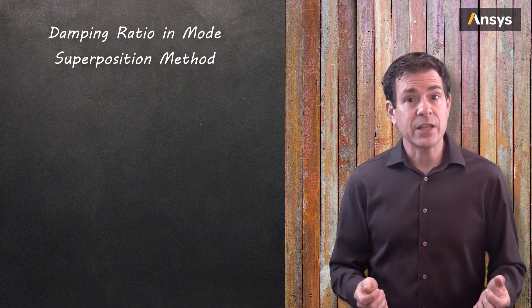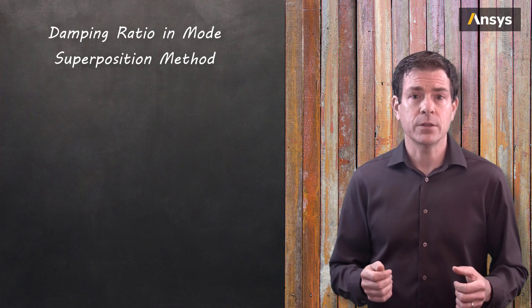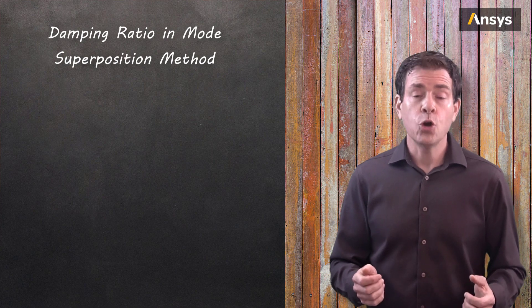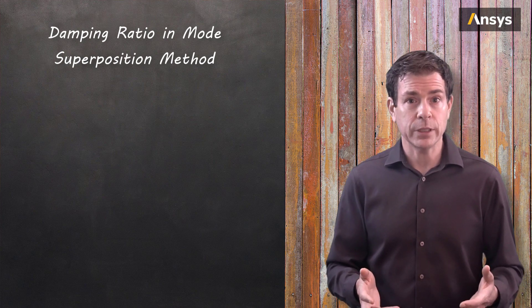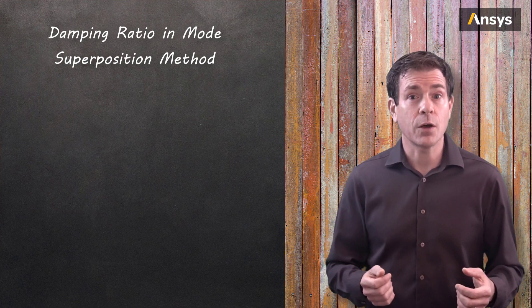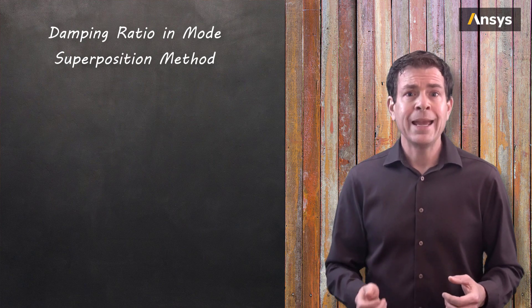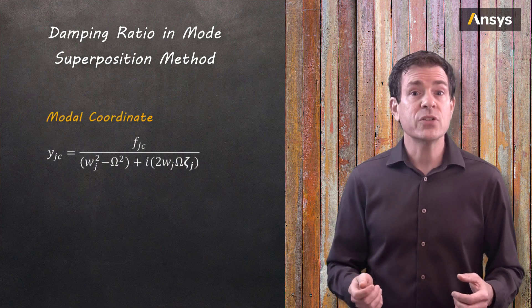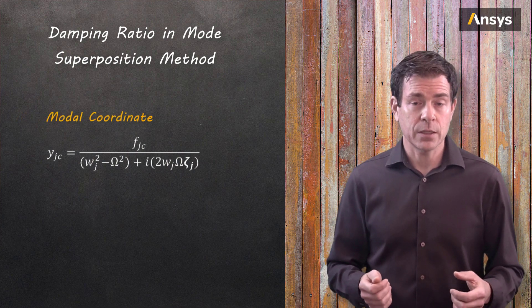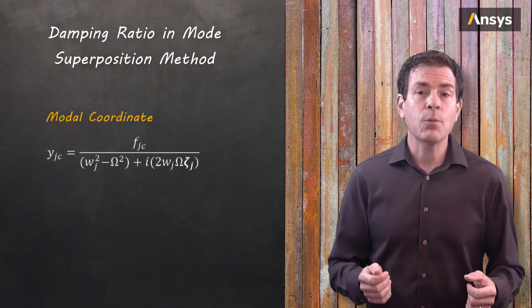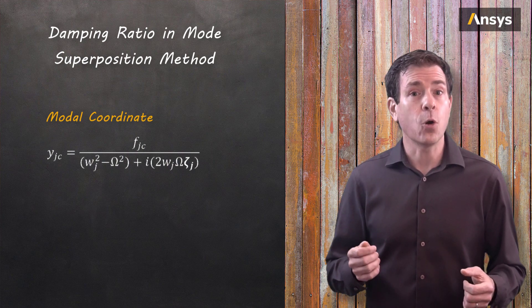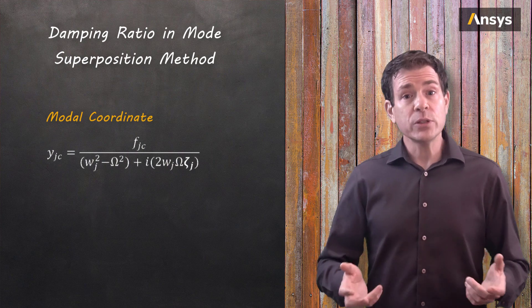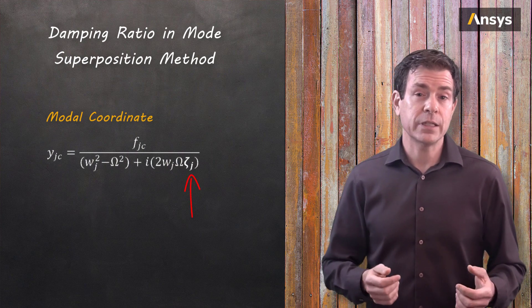Here we will change our perspective to the frequency domain from this time domain. What we will find is that using the mode superposition method, we can specify the damping ratio on a per mode basis, which will provide greater flexibility among other advantages of solving in the frequency domain. As a preview ahead, we show here the equation for the modal coordinate, which is computed for each natural frequency. This equation tells us how much each mode contributes to the overall expected amplitude of the vibration.